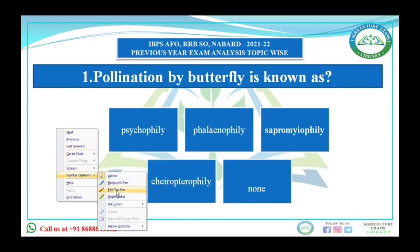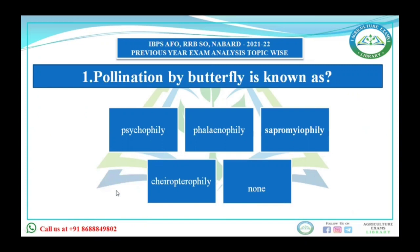The options are: psychophily, phalenophily, sapromyophily, chiropterophily, or none. You must know that insects like bees, butterflies, moths, house fly, wasp, etc. are the principal agents in transferring pollen grains from anther to the stigma of the same flower or other flowers.